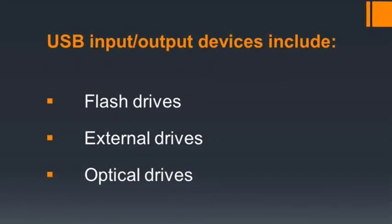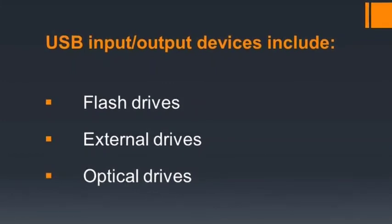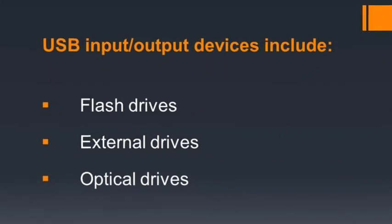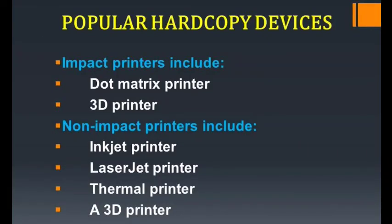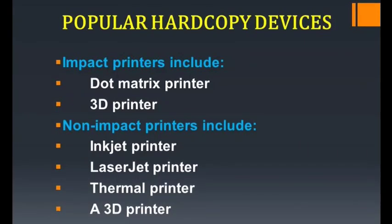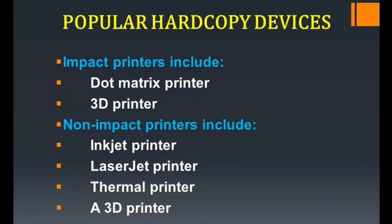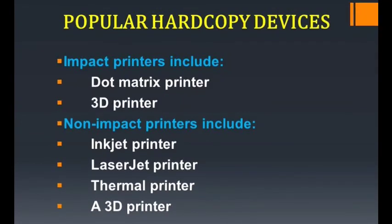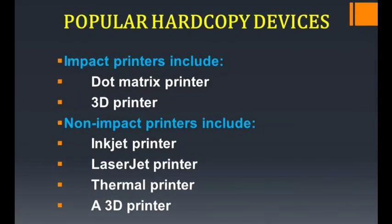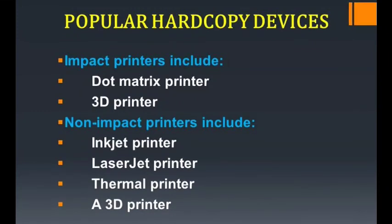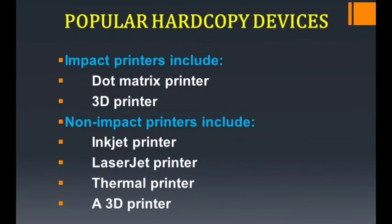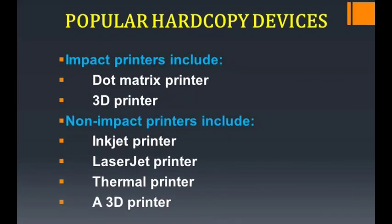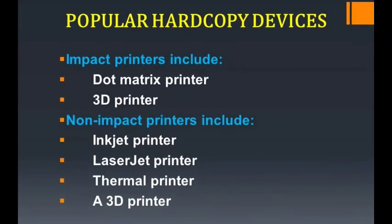USB input or output devices include flash drives, external drives, optical drives, etc. The popular hard copy devices include impact printers and non-impact printers. Impact printers include dot matrix printers and 3D printers. Non-impact printers include inkjet printer, laserjet printer, thermal printer, and 3D printer.